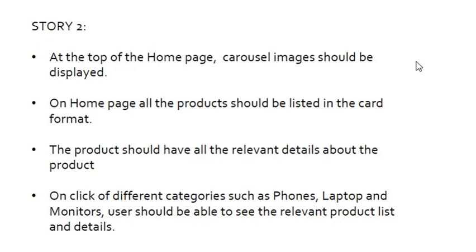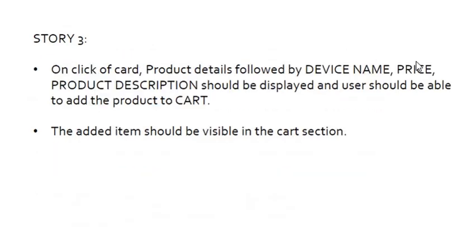This is the second user story. The third user story covers: on click of a product, each product's details — including device name, price, and product description — should be displayed. The user should be able to add the product to the cart. So if I select a mobile and click on it, I should see the device name, price, and product description, and be able to add it to the cart. The added item should also be visible in the cart.